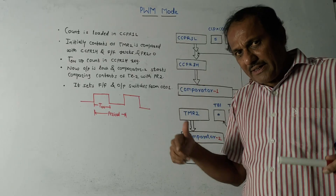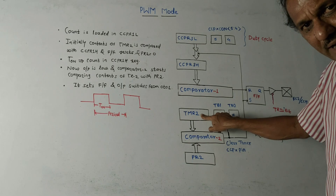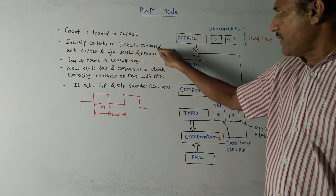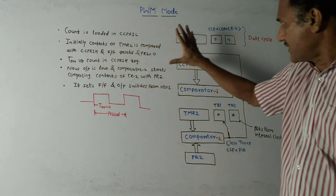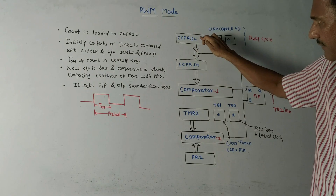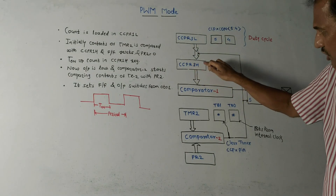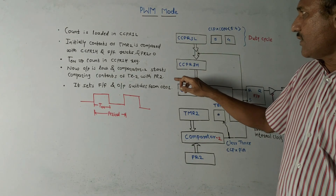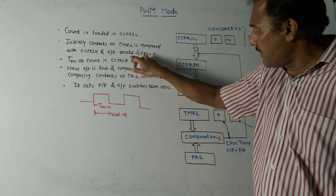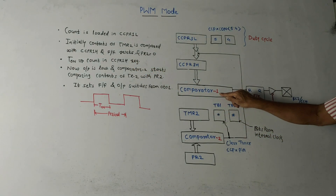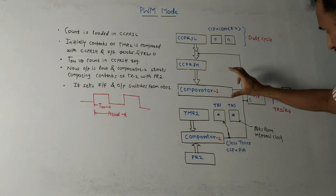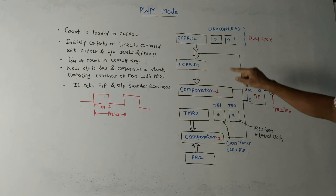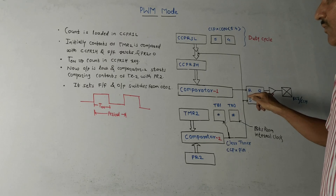With every clock pulse, Timer2 increments by one. The contents of Timer2 are compared with CCPR1H. The user loads the count into CCPR1L; the microcontroller transfers it to CCPR1H. Comparator 1 compares the contents of Timer2 with CCPR1H. This is an SR flip-flop whose reset pin is driven by comparator 1's output. Whenever comparator 1 finds a match between Timer2 and CCPR1H, it resets the flip-flop, making the output 0.